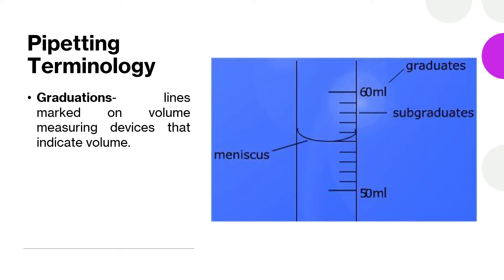Let's proceed to the different pipetting terminologies. Number one is graduations — these are the lines marked on volume measuring devices that indicate volume. As you can see in this picture, these are what we call graduations, lines that can be seen on our glasswares and plasticwares. Other terms used for graduations include calibrations, markings, grade or grading, and also gauge.